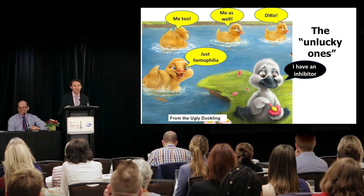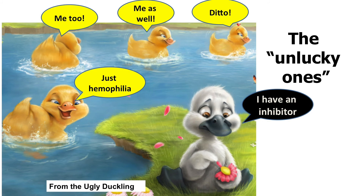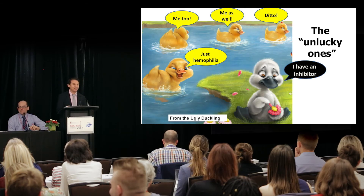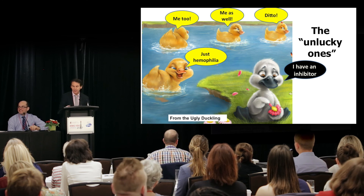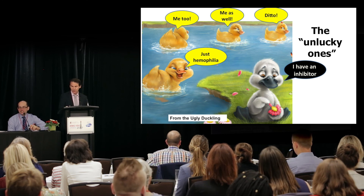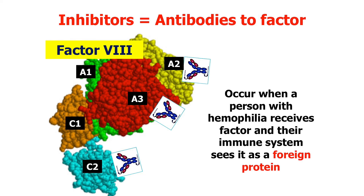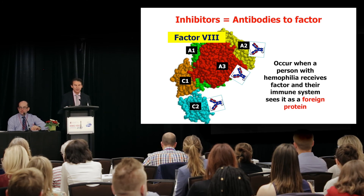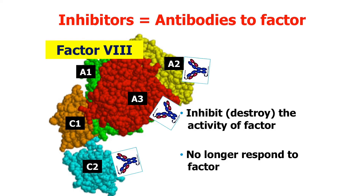If a patient develops an inhibitor, in essence they're sort of an unlucky one. The other patients just have hemophilia, but if you develop an inhibitor, now things are much, much worse. Inhibitors, as most of you know, are antibodies to factor. They occur when a person with hemophilia receives factor and their immune system sees that factor as a foreign protein. Consequently, they can develop an inhibitor or an antibody against that factor, which will inhibit or destroy the activity of factor, and consequently the patient no longer responds to factor.